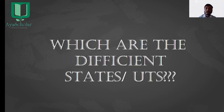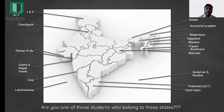The deficient states or union territories — those where there are no government run institutes offering MD or MS PG courses — are: Jammu & Kashmir, Chandigarh, Daman & Diu, Dadra Nagar Haveli, Goa, Lakshadweep, Sikkim, Arunachal Pradesh, Meghalaya, Nagaland, Manipur, Tripura, Jharkhand, Mizoram, Andaman & Nicobar, Puducherry, and Tamil Nadu. Are you a student from one of these states? If yes, you are eligible to apply under CGN or Central Government Nomination.